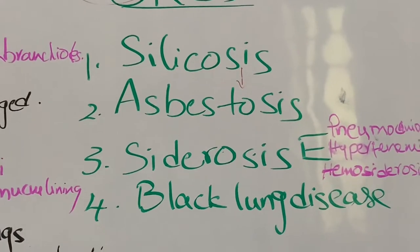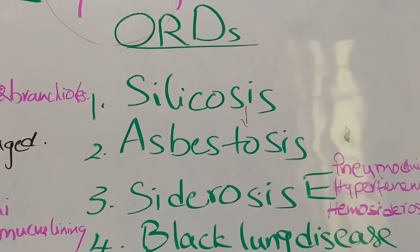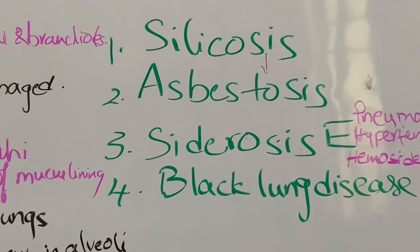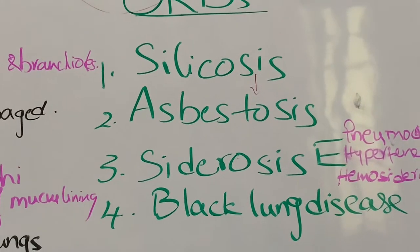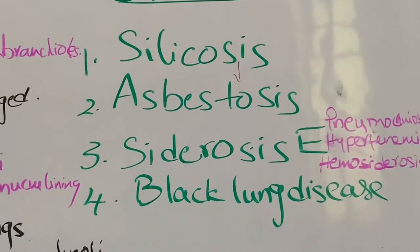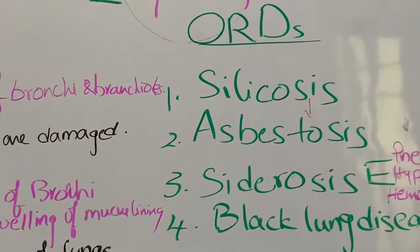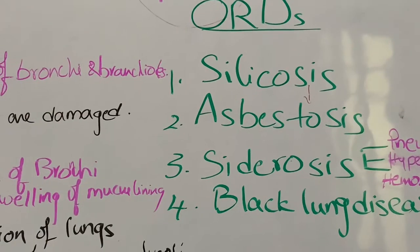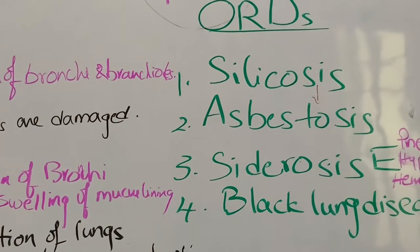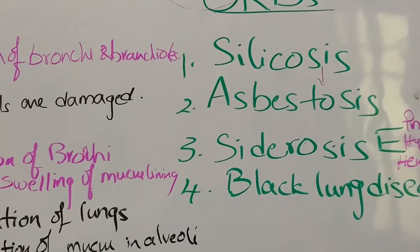The fourth occupational respiratory disorder is black lung disease, which occurs in people working in coal mines. As they are exposed to coal dust, their lungs become black in color — hence the name black lung disease. This concludes the lesson on respiratory disorders. Until next time, keep learning and thank you for watching.